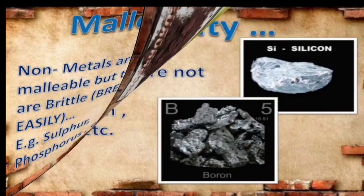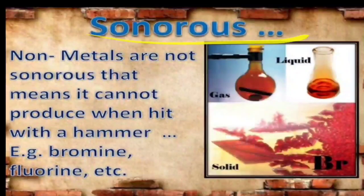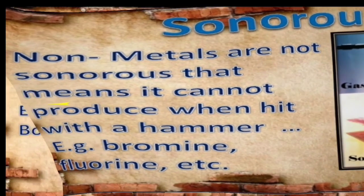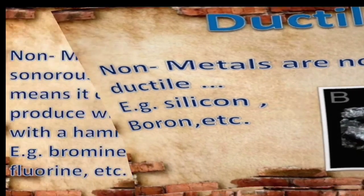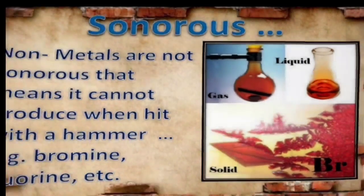Ductility: non-metals are not ductile. Examples: silicon and boron — they do not come into the form of thin wires. Sonorous: all non-metals are generally in the form of gases, and few are in the form of liquid — for example, bromine. Non-metals are non-sonorous; they do not produce sound. Bromine and fluorine are in the form of gases and do not produce sound, so they are called non-sonorous.